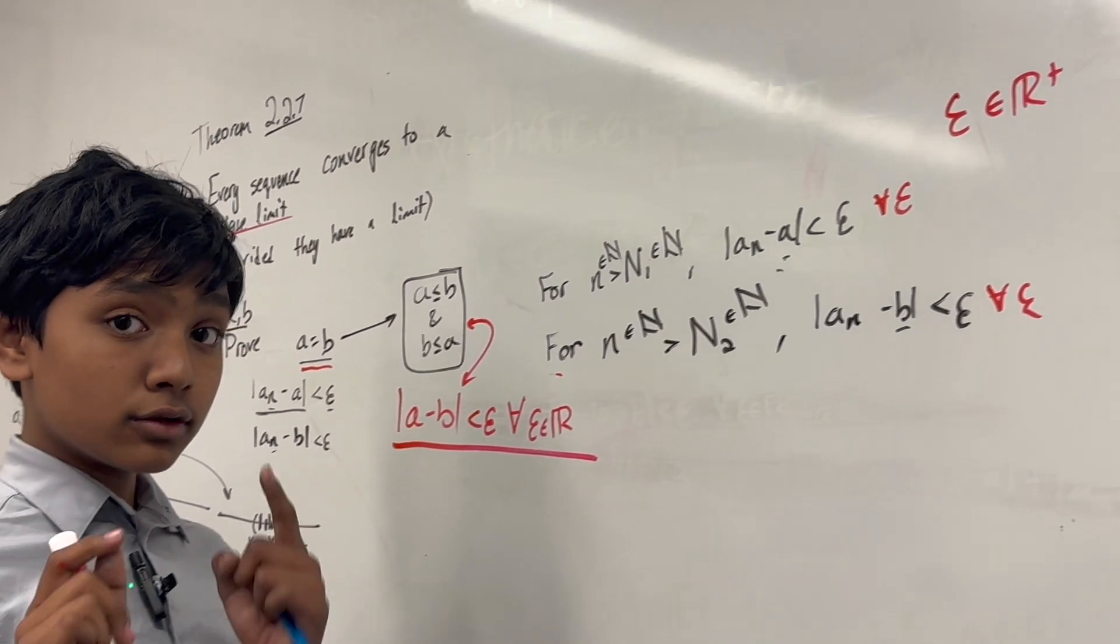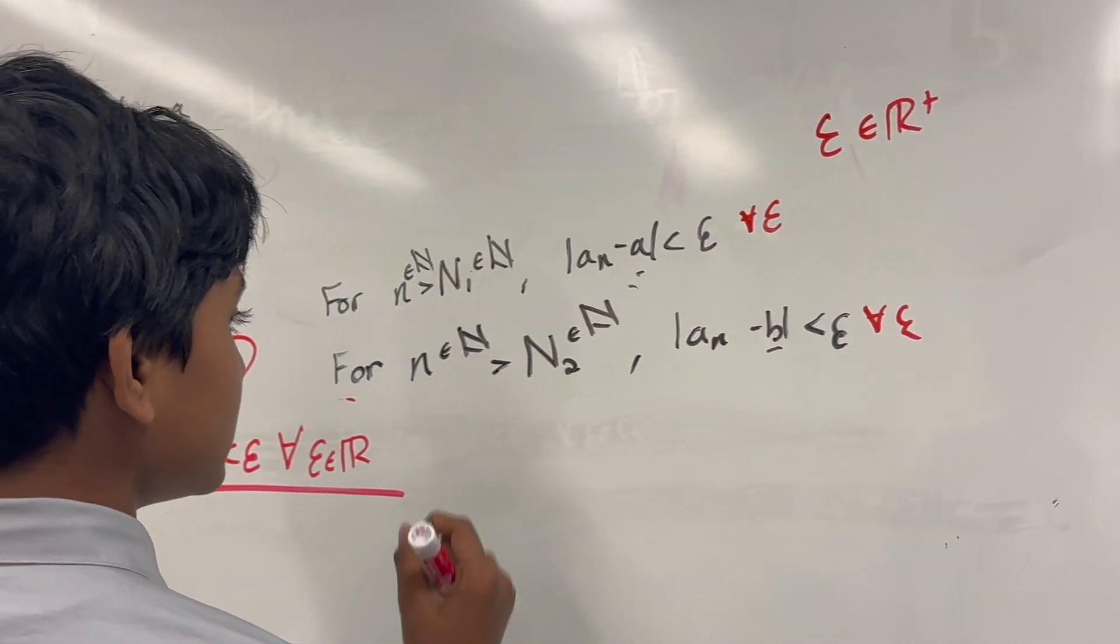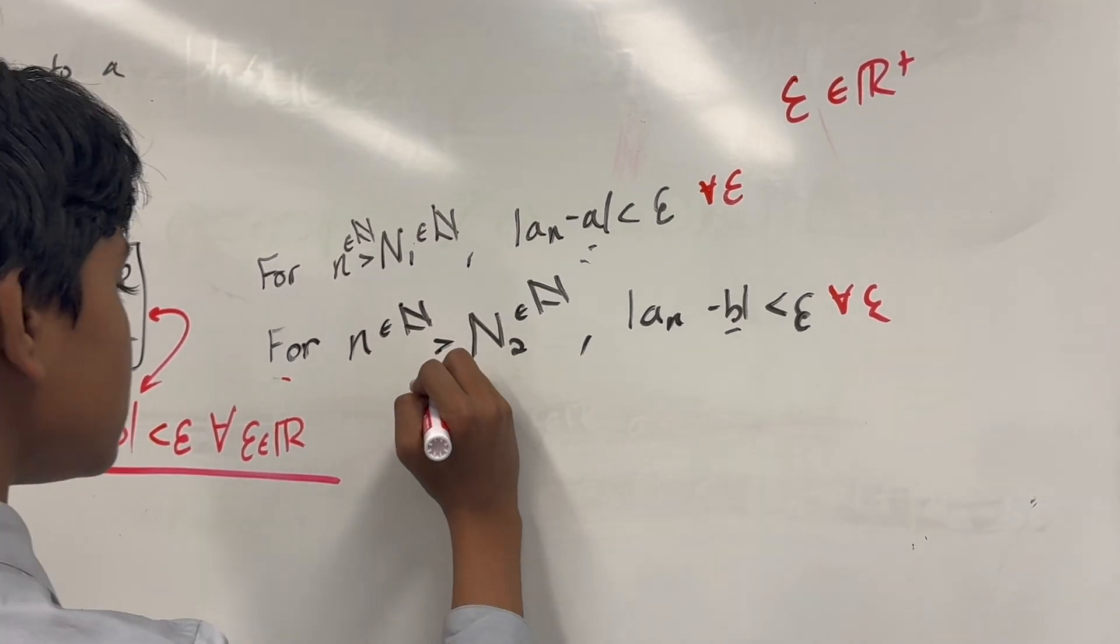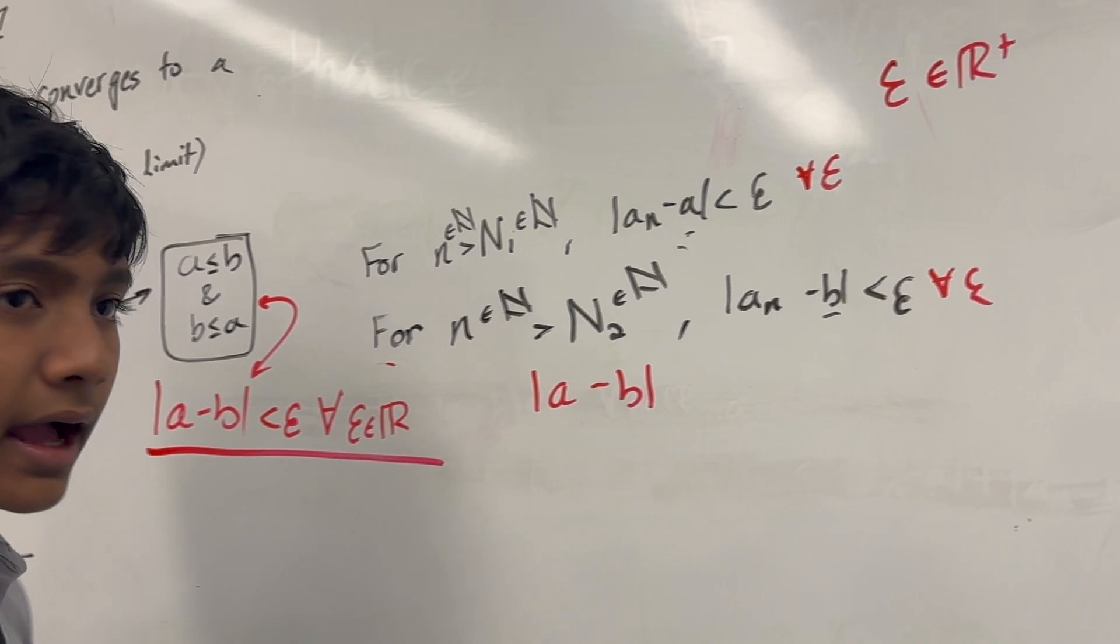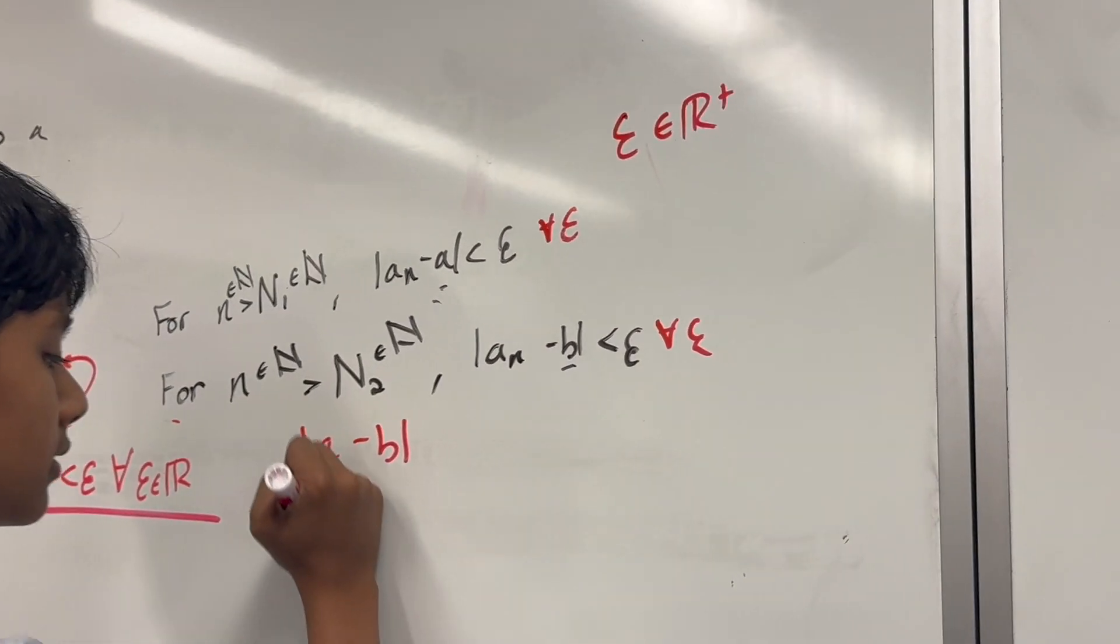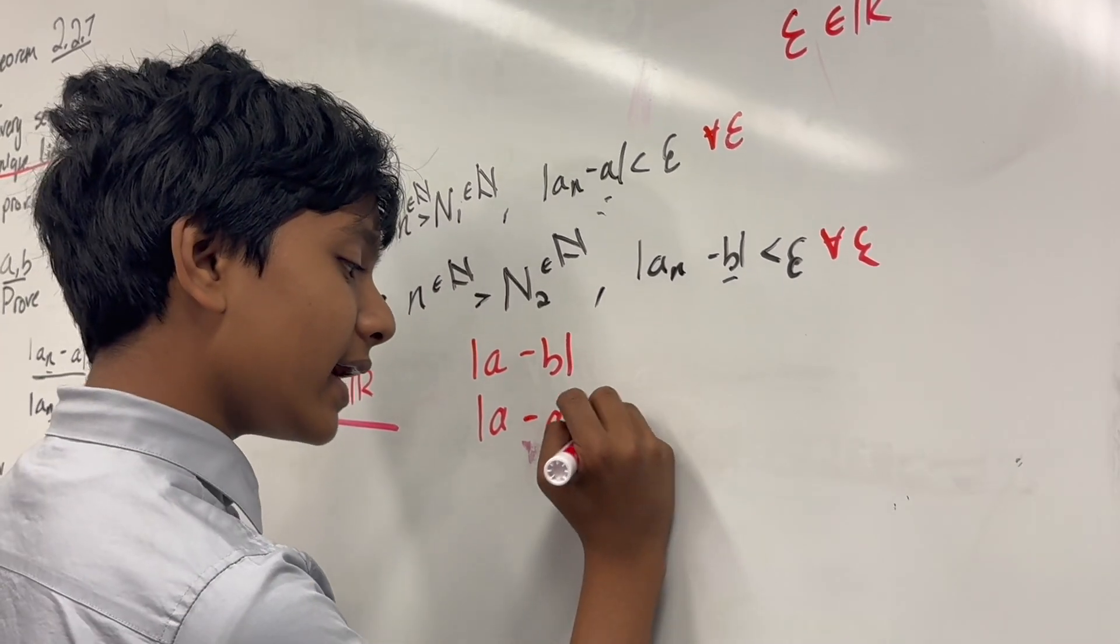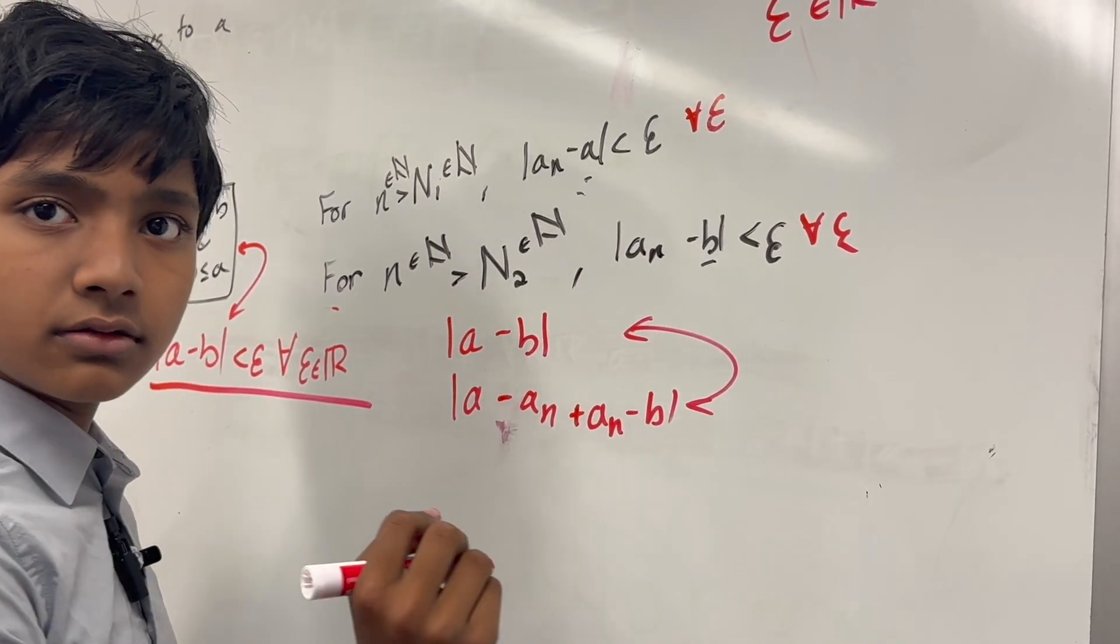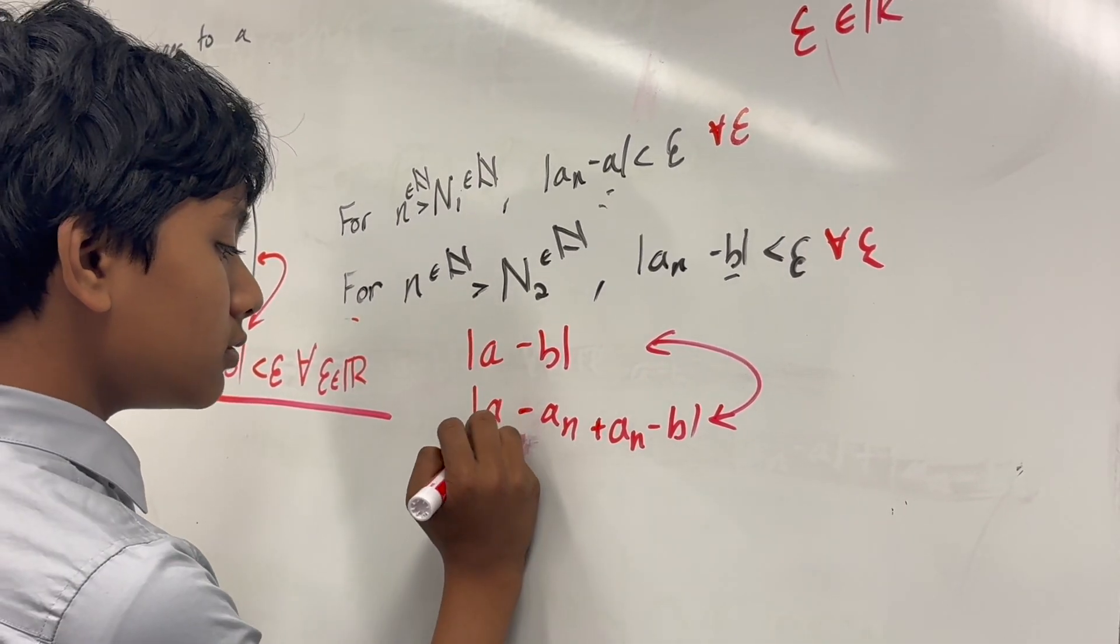So, now, here's where the triangle inequality comes in. And that's another one of our tricks, you see? So, here's what we do. We take A minus B, right? Now, what is that? Can't we just add, or rather, subtract A n, and then add A n again? Is this anything different from that? You think so? No, nothing. It's the same. Yeah.